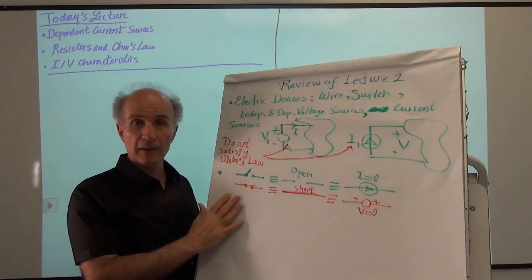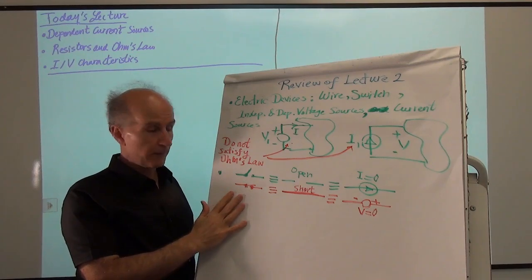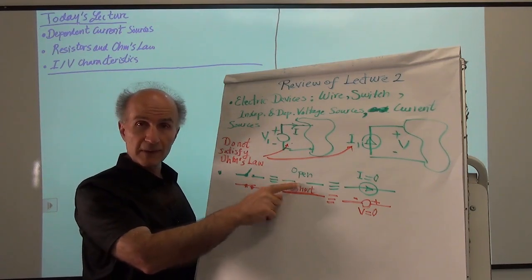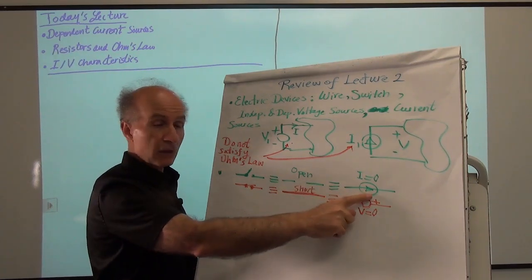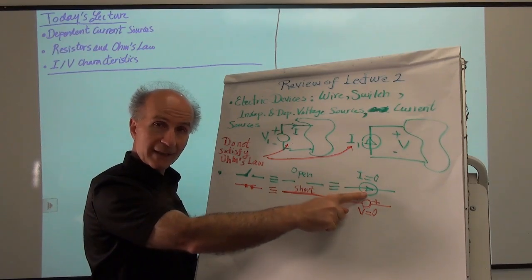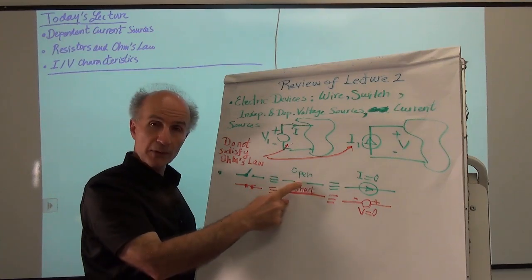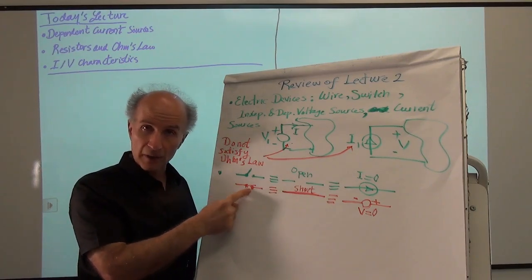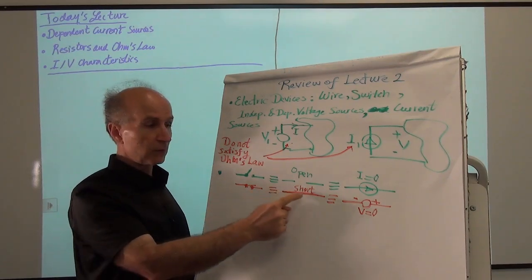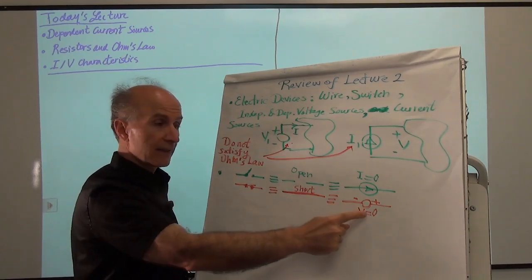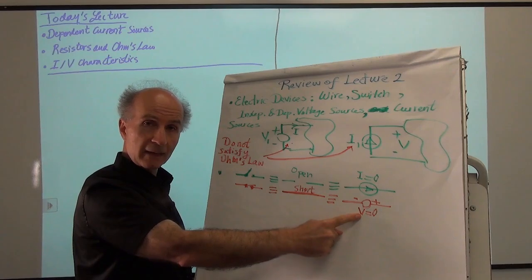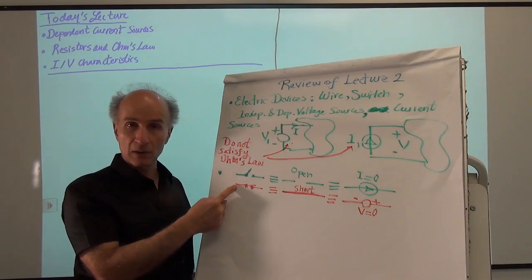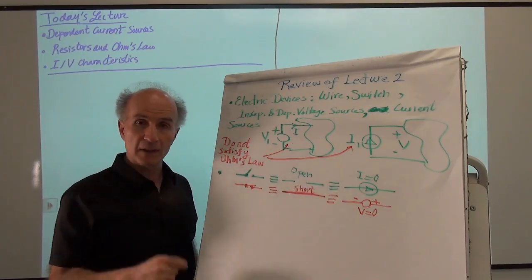We also saw this equivalence, which is critical for the future. A switch that is open is equivalent to an open circuit because it doesn't allow any current to flow, and that's also equivalent to a current source whose value is zero. Similarly, a switch that is closed or conducting is equivalent to a short circuit, and that is equivalent to a zero-volt voltage source, because such a voltage source guarantees zero difference between the two points — the same as across a closed switch. It's important to remember these equivalencies.